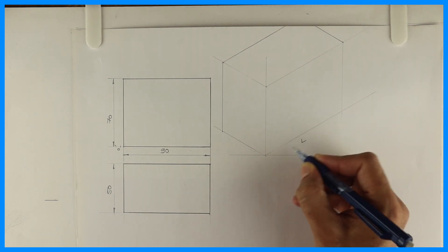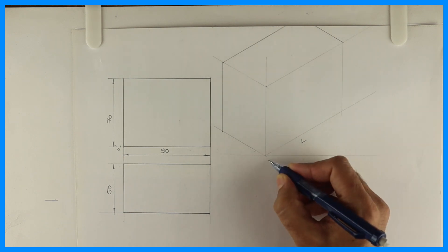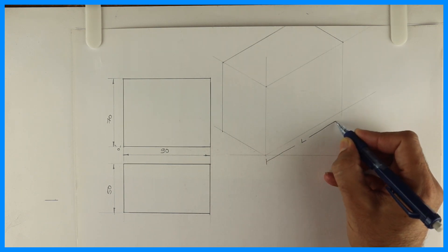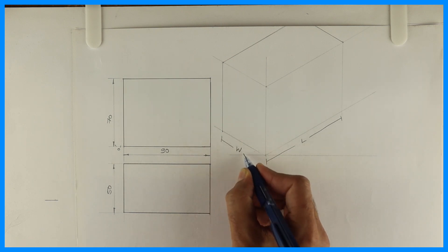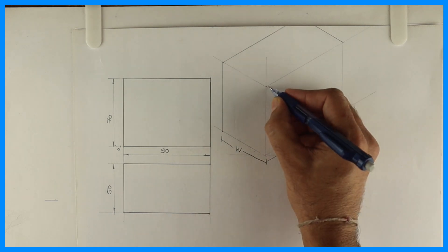See, this is length. Whenever it is not given, generally we take the maximum length as length. This is width and this is height.